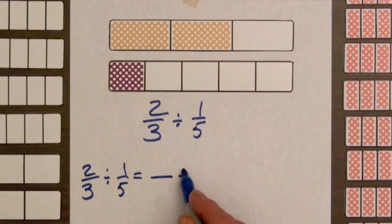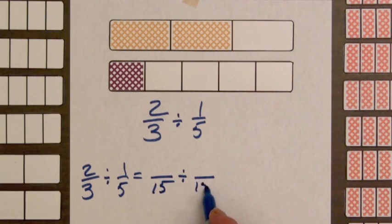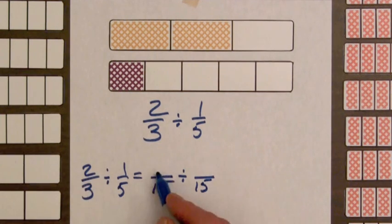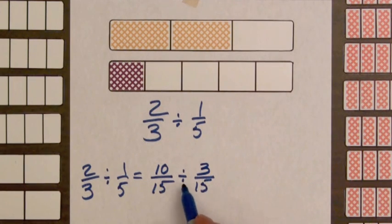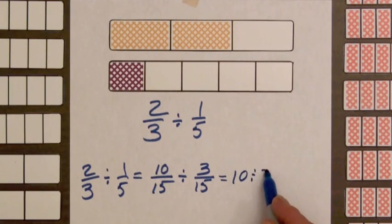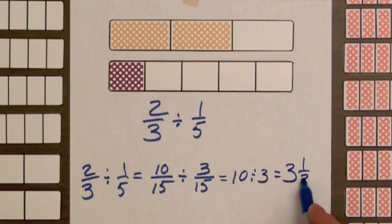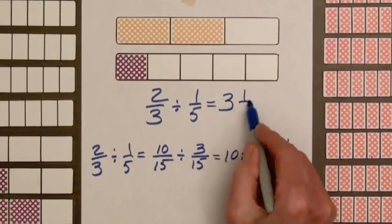So we've got two-thirds divided by one-fifth. Now we'll get common denominators. The common denominator is fifteen. So we multiply three by five to get fifteen. Five times two is ten. Three times five is fifteen, and three times one is three. Now we have parts of the same size. If these are bars, both bars would have fifteen parts. We have ten parts shaded, three parts shaded. So we merely divide ten by three. Ten divided by three is three and one-third. So two-thirds divided by one-fifth is three and one-third.